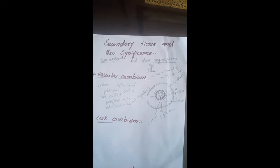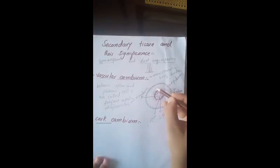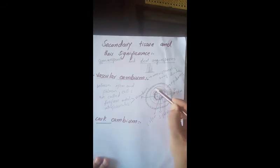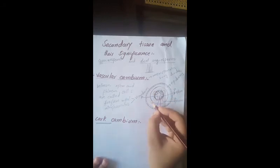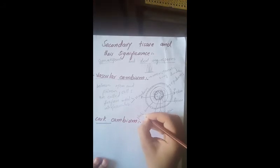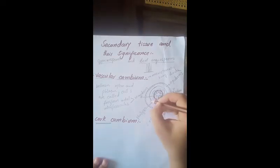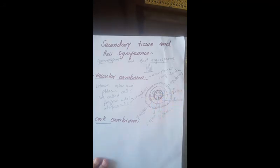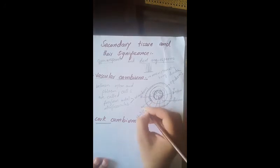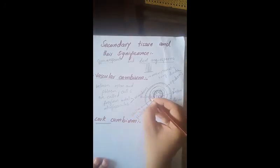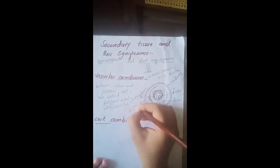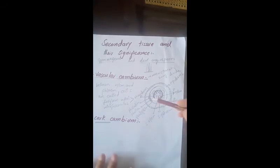The second type is cork cambium. Below the epidermis is the hypodermis. A layer of cells in the hypodermis gains the ability to divide and becomes meristematic in nature. This layer is also called the phellogen. The phellogen continuously divides and makes new cells outside and inside. The new cells formed outside are called phellum, and the inside cells are called phellogderm.